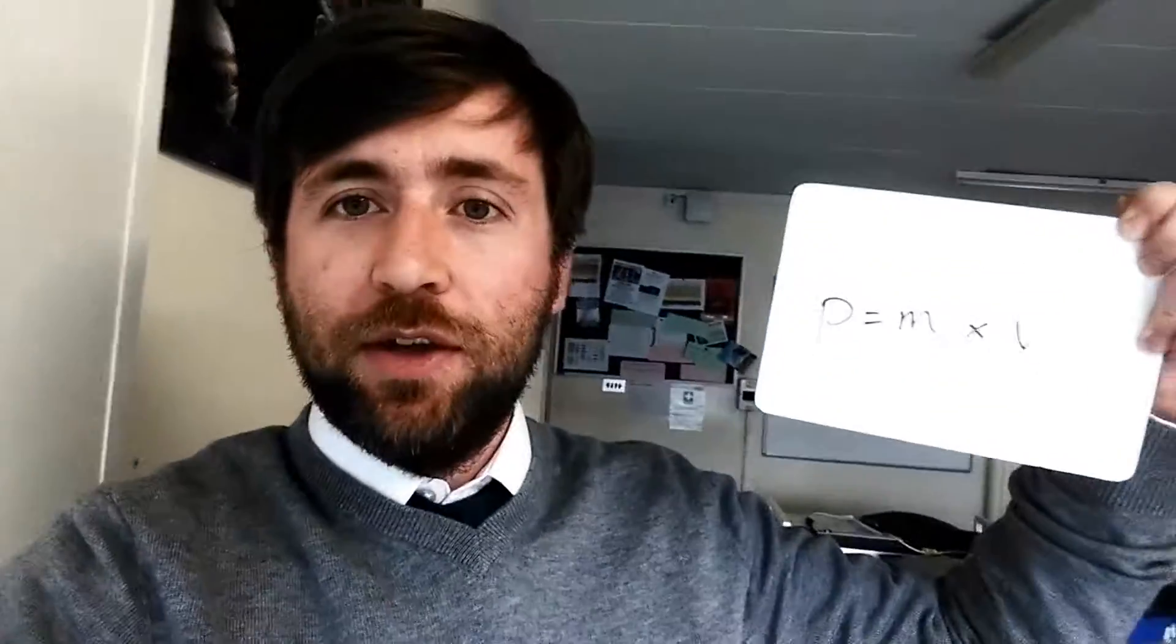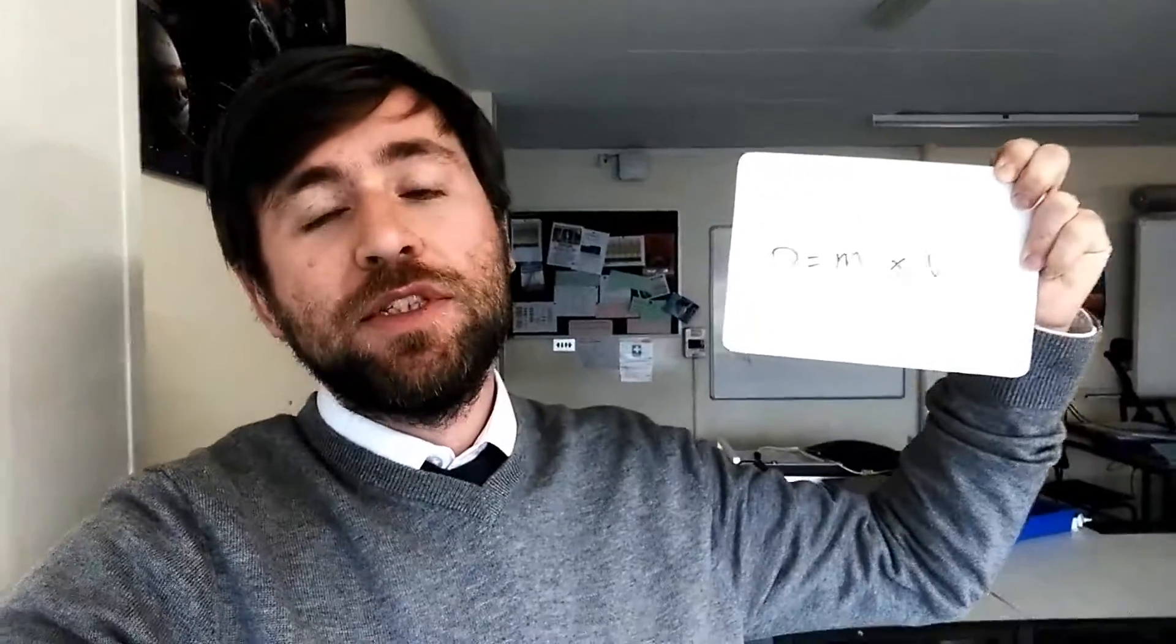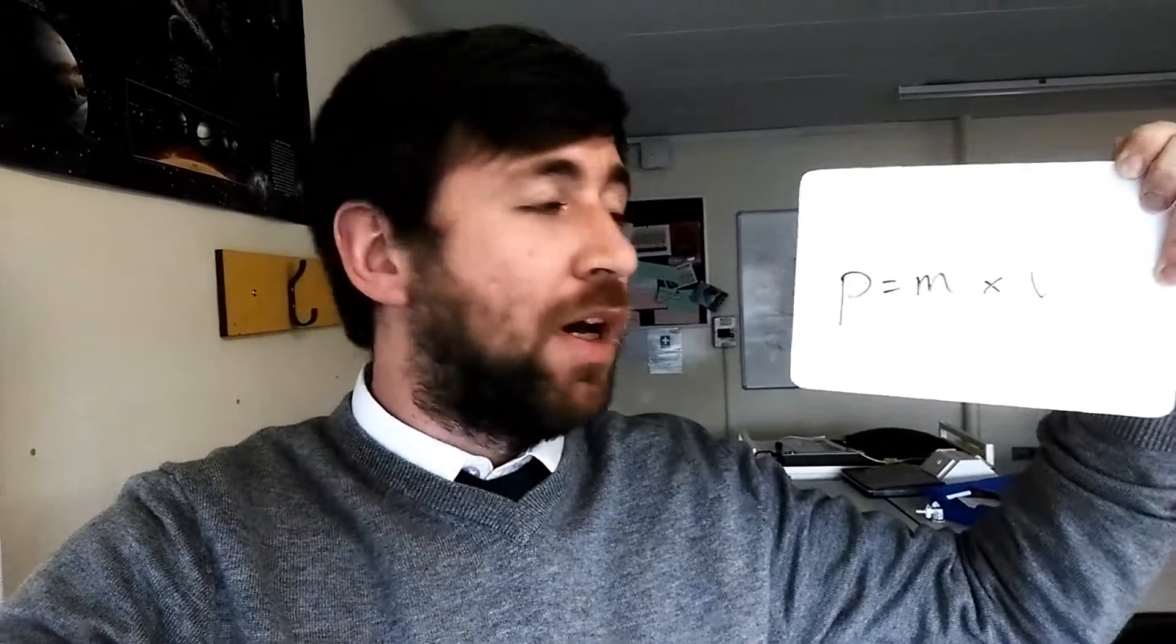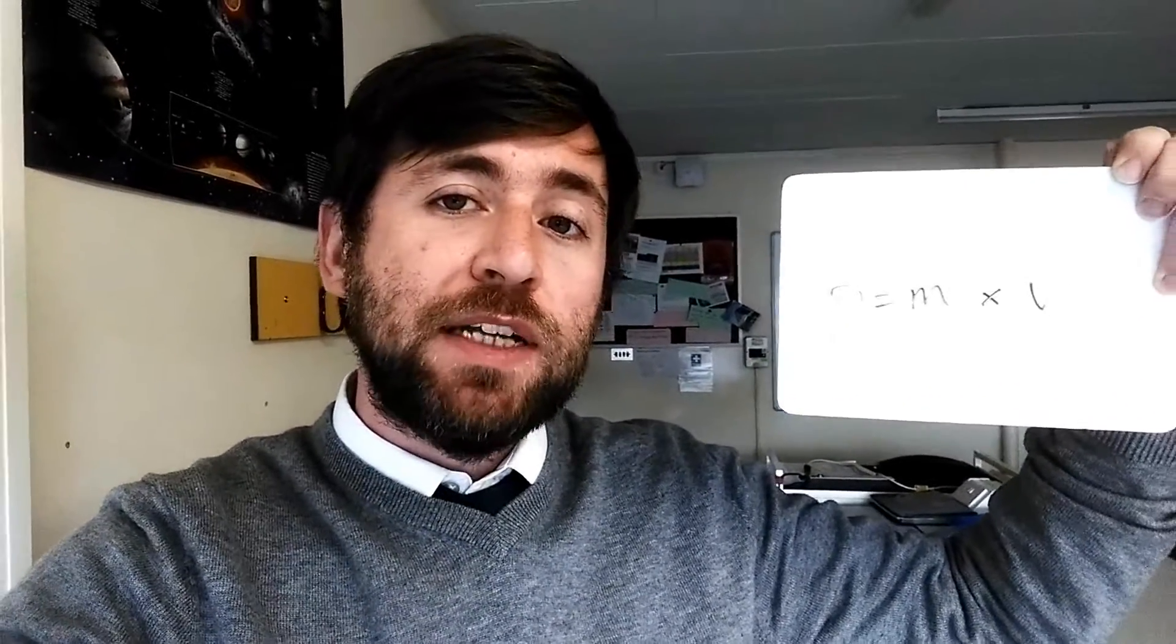If you know the formula, you can figure out the units. Here's another common one that people don't know: the unit for momentum. Momentum doesn't have a made-up unit. You just use the units of whatever you have multiplied to make momentum. So the formula for momentum is mass times velocity.